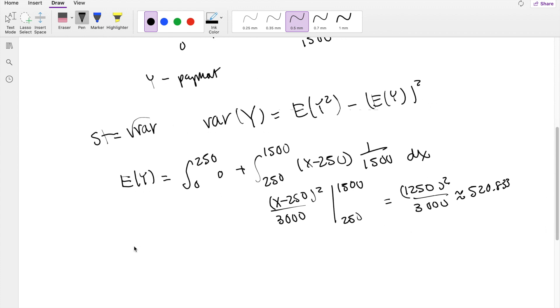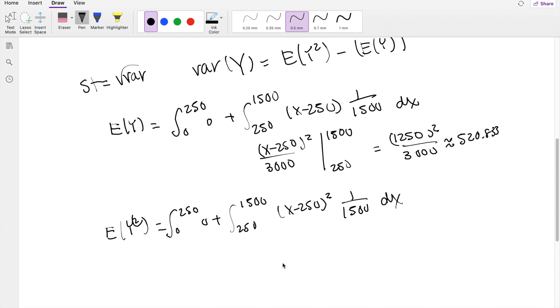All right, second moment, E[Y squared]. This is equal to, same thing here, 0 to 250 is going to give you 0, from 250 to 1,500, the value is going to be X minus 250 squared, right, because it's squared, times 1 over 1,500 probability function dx. Taking the antiderivative, you get X minus 250 cubed over 4,500, integrating from 250 to 1,500.